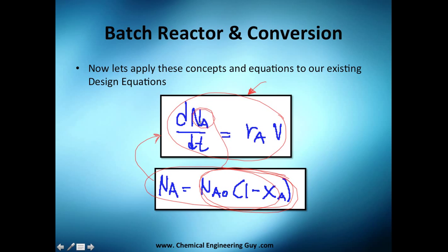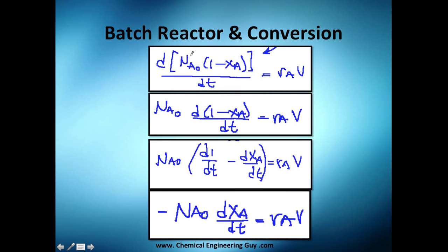I only change this part here, and since the total amount of moles being fed at the beginning is a constant, it's a value that's not moving, I can take it away from the derivative. And if you know a little bit of derivatives, I can split this into two derivatives: this one, derivative of one with respect to time, and the negative of the derivative of XA with respect to time.